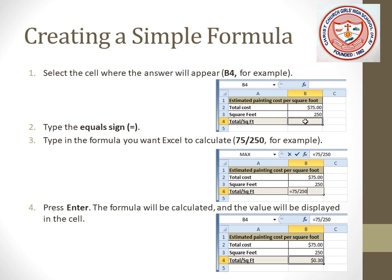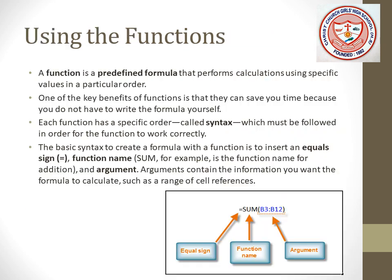Click — for example, cell B4, column B and row number 4. We can see the answer in that cell. Step number two: type the equal sign, then type the formula you want Excel to calculate. For example, type 75 forward slash 250, then press Enter. You can see the result displayed in the cell.